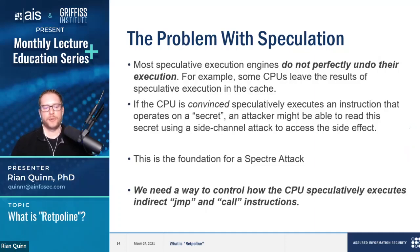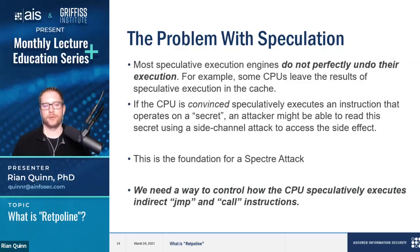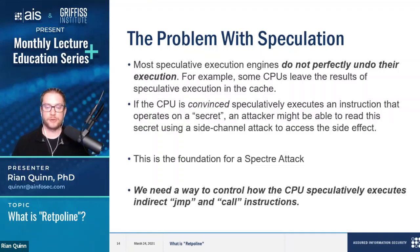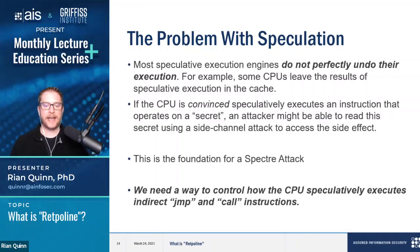Here's the problem with speculation: when the CPU makes a guess, it has to perfectly undo that execution if it guesses wrong. In reality, that's not what happens — CPUs leave things behind. It's actually possible for a CPU to not completely undo the execution of certain instructions and still keep the CPU state such that the application's execution is correct. But since the state is not completely undone, there are side effects left behind. If the CPU speculatively executes an instruction that happens to operate on a secret — say a password or crypto key — that secret might remain inside the CPU, and an attacker could use a side channel attack to gain access to it.